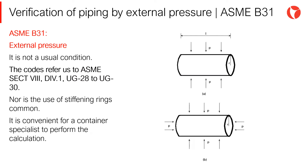The B31 code does not include a verification method for these cases. The different sections indicate the following: B31-1 and B31-3 indicate to follow the ASME code section 8, division 1, sections UG-28 to UG-30, whilst B31-4 and ASME B31-8 do not indicate a specific verification method. Nevertheless, it is usual to follow the pressure vessel code, the ASME code section 8, division 1, part UG-28 to UG-30.